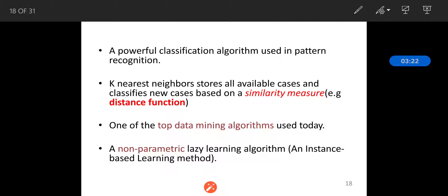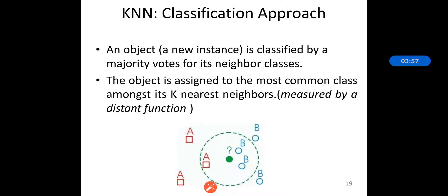Whenever we talk about KNN, it always addresses pattern recognition problems. The simple version of KNN is to predict the target label by finding the nearest neighbor class, and the closest class is identified using a distance measure — that is nothing but Euclidean distance, which we have seen in our last section. The KNN algorithm is a pattern recognition model used for both classification and regression. In the classification approach, an object is classified by majority votes of its neighbor class — the object is assigned to the most common class among its K nearest neighbors, measured by distance functions.